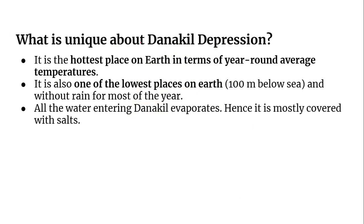What is unique about Danakil Depression? It is the hottest place on earth in terms of year-round average temperatures. It is also one of the lowest places on earth — 100 meters below sea level — and without rain for most of the year. All the water entering Danakil evaporates, hence it is mostly covered with salts.